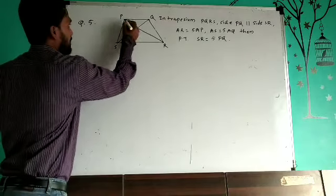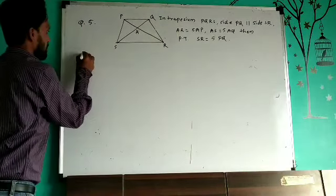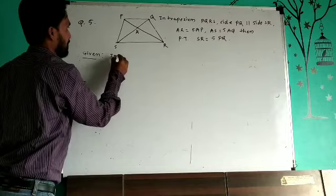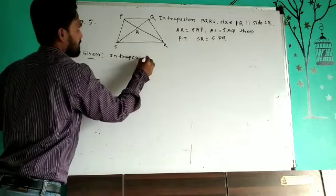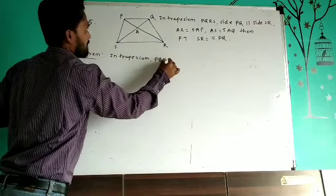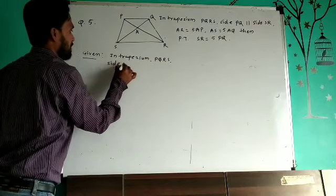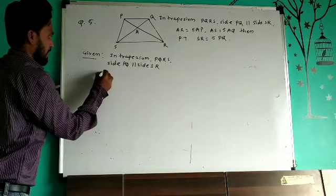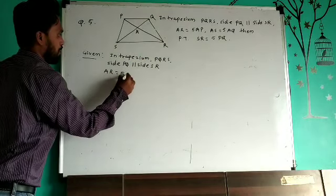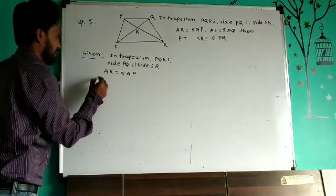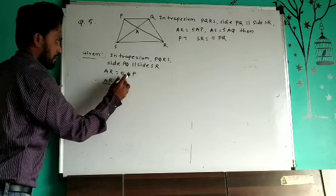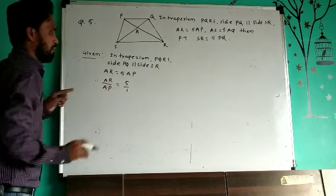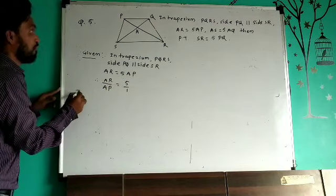In trapezium PQRS, side PQ is parallel to side SR — this is given. Also given: AR is equal to 5 AP. Therefore, AR upon AP is equal to 5 upon 1.